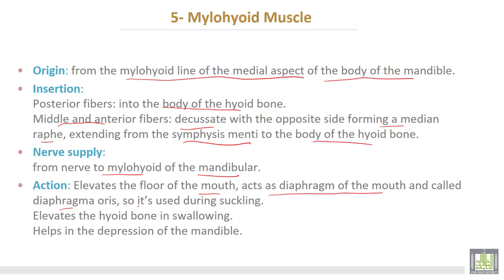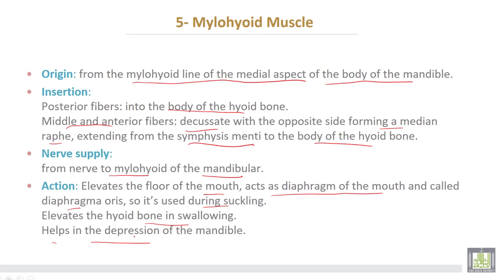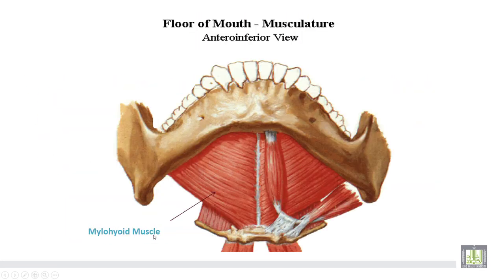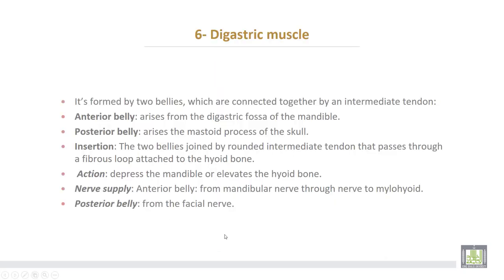The mylohyoid is used during suckling in infants. It also elevates the hyoid bone during swallowing and helps in depression of the mandible. This is the mylohyoid muscle — the anterior and middle fibers decussate to form a median raphe, which extends from the symphysis menti to the body of the hyoid bone.